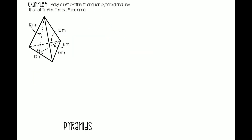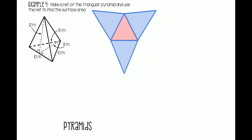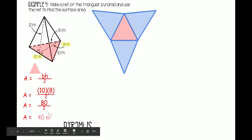Let's try one last example. We're going to make a net of this triangular pyramid and use the net to find the surface area. A triangular pyramid has a triangular base, so we're going to find that area first. Area of a triangle is base times height divided by 2. The base is 10, and the height — this segment right here — is 8 meters. So replace h with 8, divide by 2. 10 times 8 is 80, divided by 2 is 40 meters squared. Write that for our base.